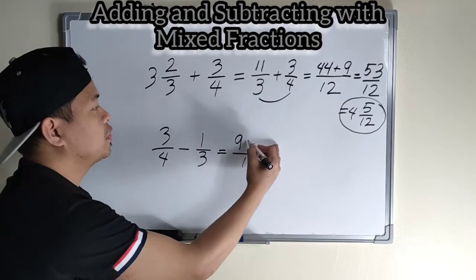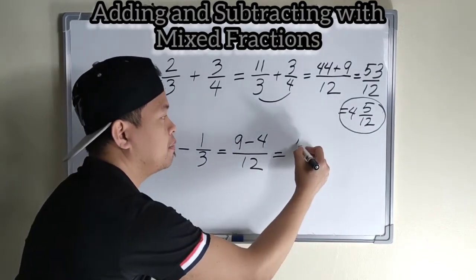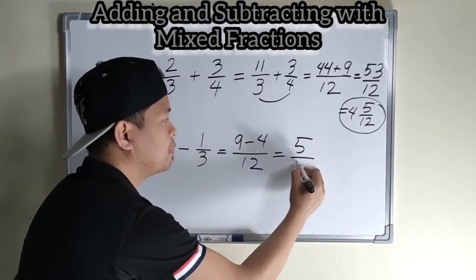Then, one times four is four. Nine minus four is five. Copy the denominator.